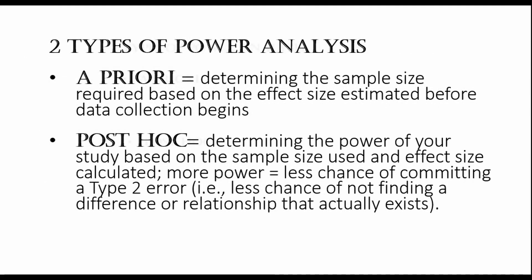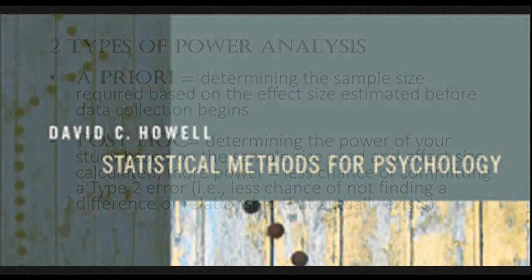There are two types of power calculations. Firstly, there's an a priori power calculation where you want to find out the required sample size needed to get adequate statistical power for your test. A priori is done before your actual data collection and initial analysis. This is opposed to a post hoc calculation, which determines the power of your study based on data you've already collected — for example, if you've collected 50 participants and already calculated the effect size, you can determine whether there's a high or low chance of a type 2 error.